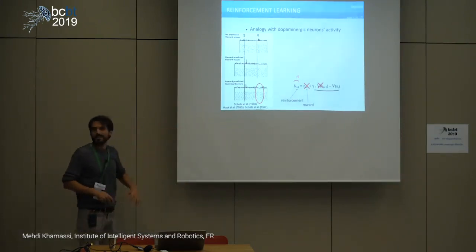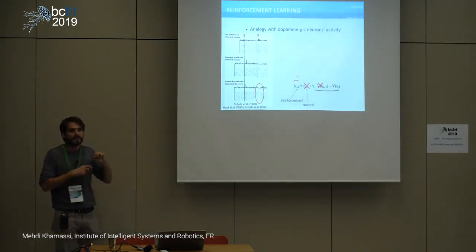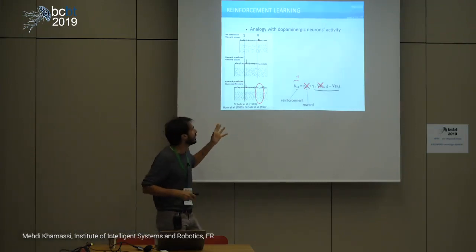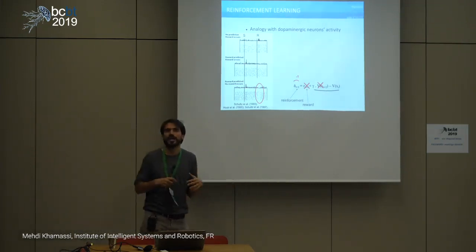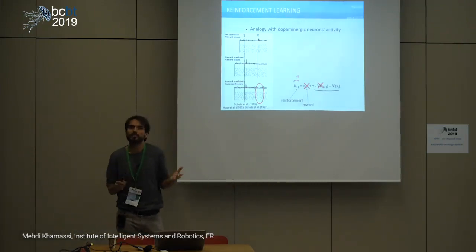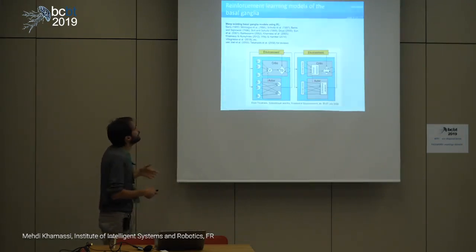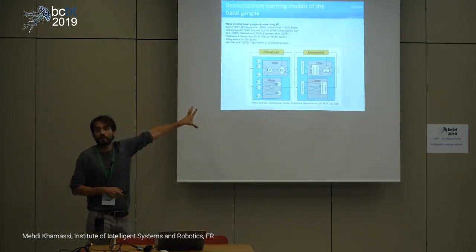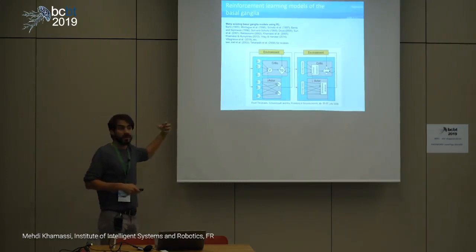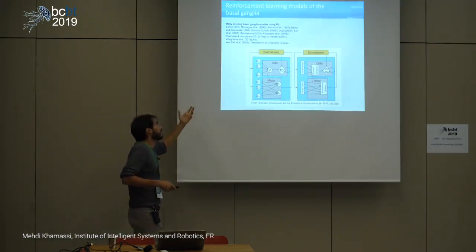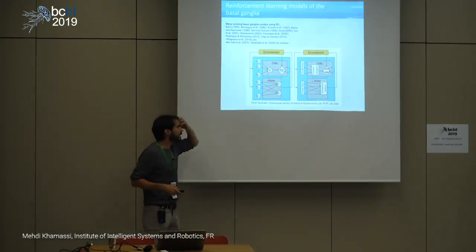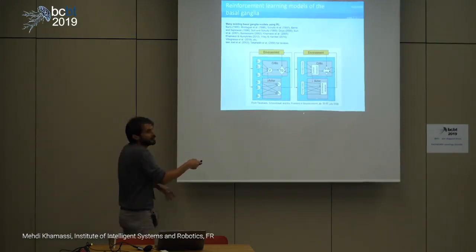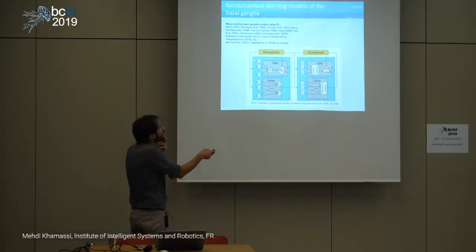Everybody is now using reinforcement learning models. People first started developing basal ganglia models because the basal ganglia are the main target of dopamine innervation. Actor-critic models have been mentioned before: some neurons in the limbic striatum might estimate value and anticipate reward, sending signals to the dopaminergic system to compute reward prediction errors.